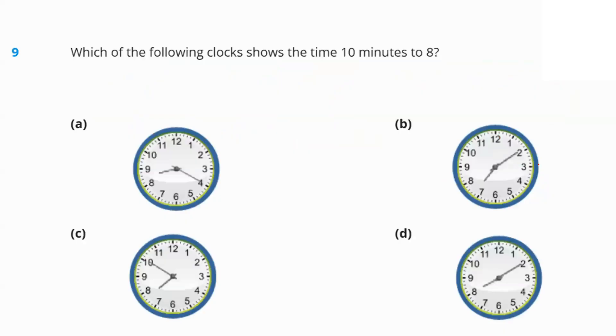Which of the following clock shows time 10 minutes to eight? 10 minutes to eight means 7.50. Which of the clock shows that time? Option C, the third clock.